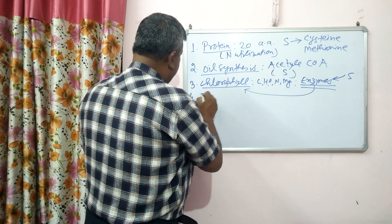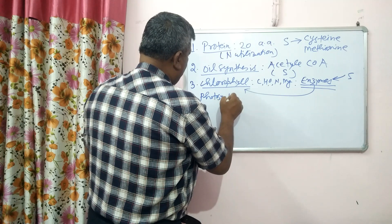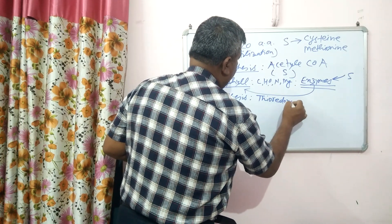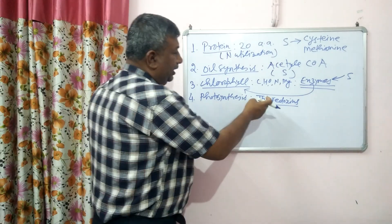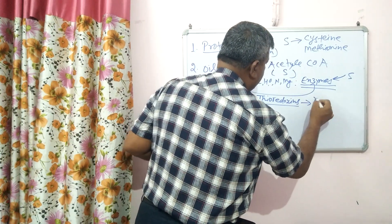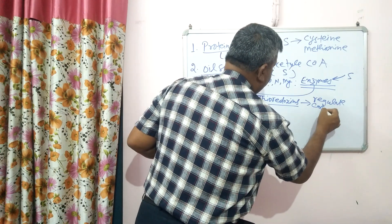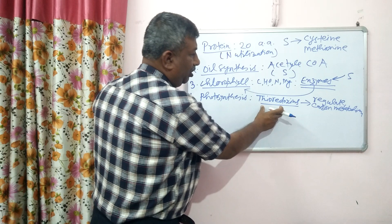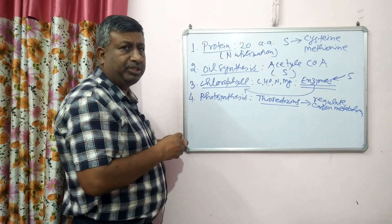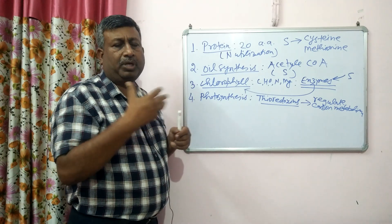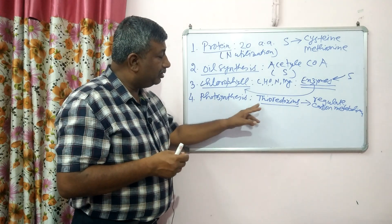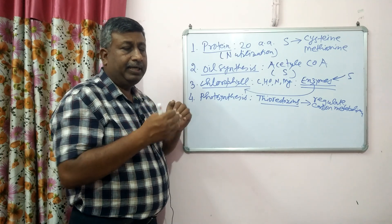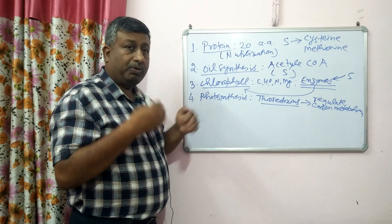Sulfur is also involved in photosynthesis. In photosynthesis, there is a protein called thioredoxin. Thioredoxin proteins are sulfur-containing proteins that regulate carbon metabolism — specifically CO2 fixation. Under sulfur deficiency, there is poor production of thioredoxin, leading to poor carbon metabolism and a reduced rate of photosynthesis. So sulfur is very important in photosynthesis, protein synthesis, oil synthesis, and chlorophyll formation.